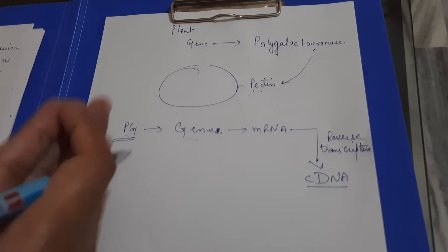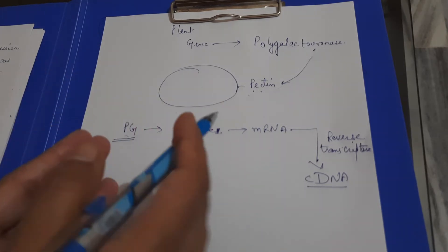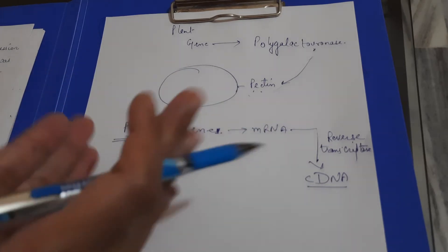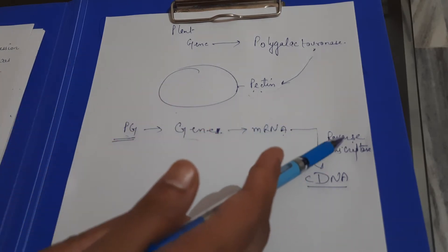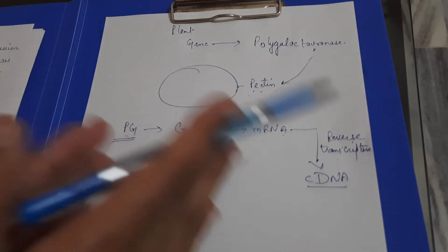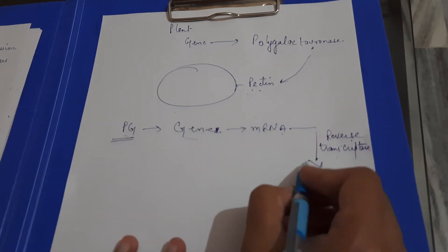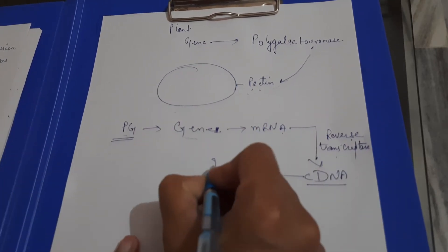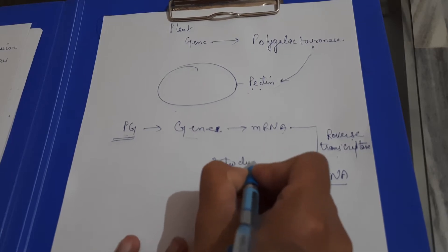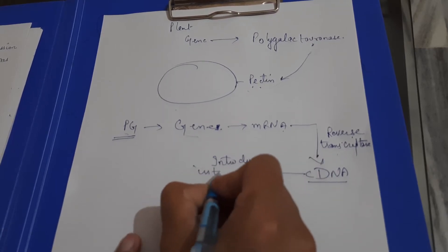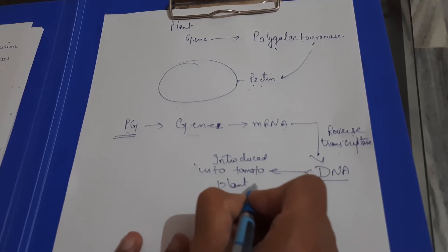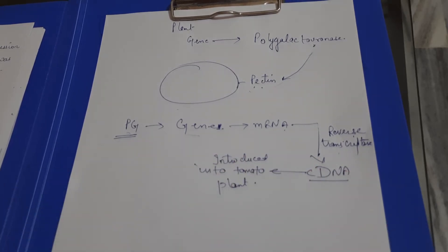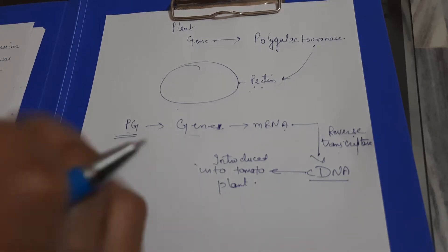In the lab, the polygalacturonase gene is expressed to produce mRNA. The mRNA is acted upon by reverse transcriptase to produce cDNA — complementary DNA. This cDNA is then introduced into the tomato plant.